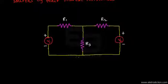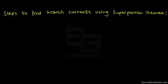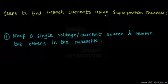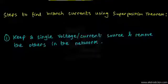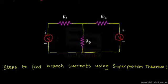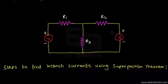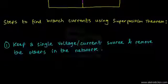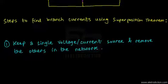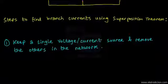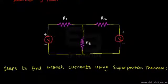Let's go through the steps to solve this network using the superposition theorem. Step one states: keep a single voltage or current source and remove the others. In this network there are two voltage sources — V1 on the left and V2 on the right — so we must remove either V1 or V2, leaving only one active at a time.